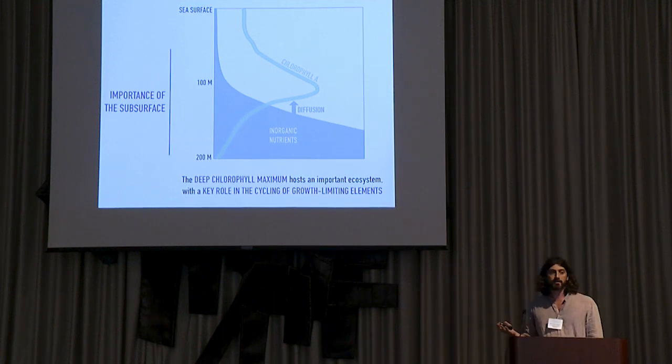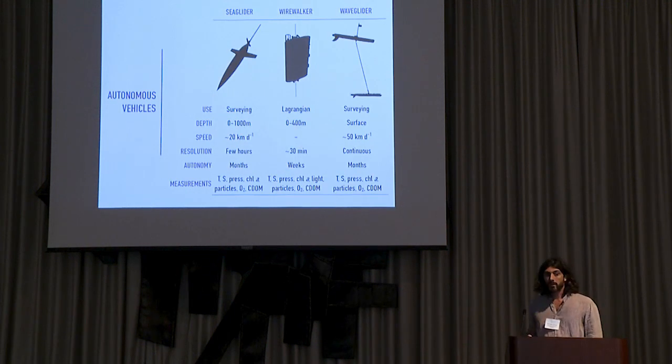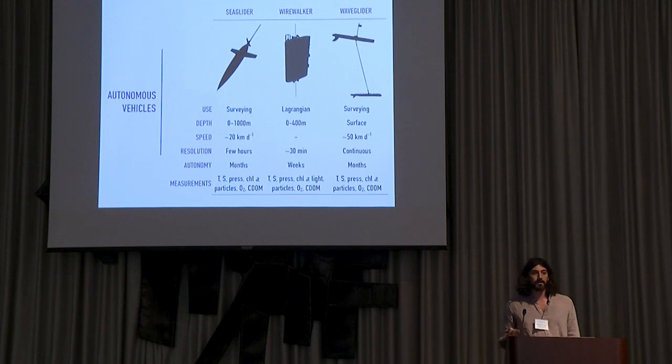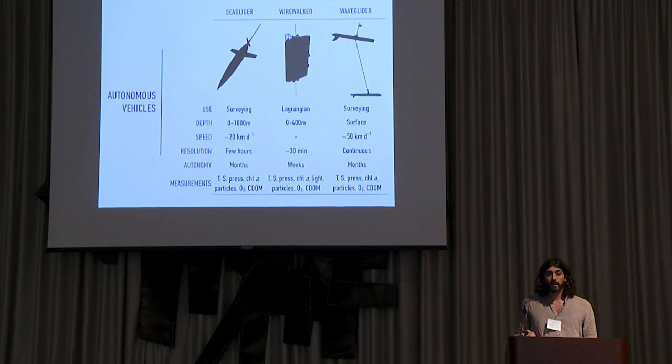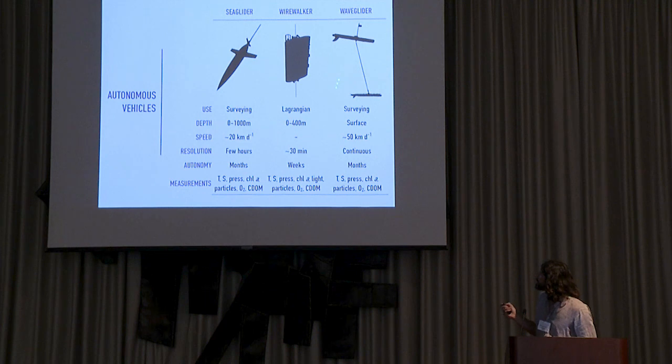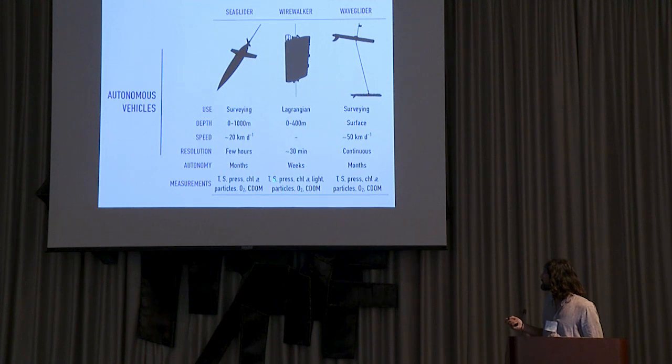We need to use something else. Ships are there, they are expensive. But we can use autonomous underwater vehicles, and that's what I'm going to talk about. With Dave, Steve Poulos, and Dave Karl, we have been using several underwater vehicles. I'm showing you three of them: sea gliders, wire walkers, and wave gliders. But I'm going to focus on the sea gliders.